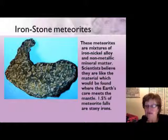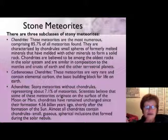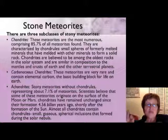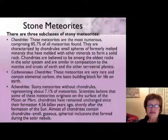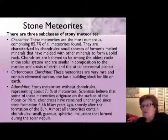The last type is the stony meteorite, and there are three kinds. First, chondrites — the most common, at 85.7 percent of all meteorites. They have very characteristic chondrules: small spheres that were once melted minerals that have since solidified. Chondrites are believed to be among the oldest rocks in the entire solar system, and they represent the composition of the Earth's mantle and crust.